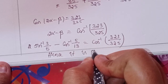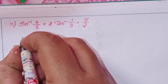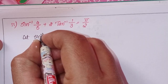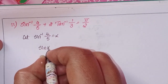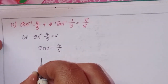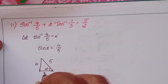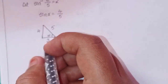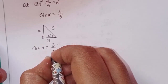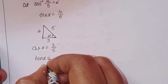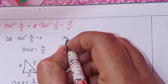Next, second problem. Let sin⁻¹(4/5) = alpha, so sin(alpha) = 4/5. Take a right triangle with angle alpha; opposite by hypotenuse, so automatically the adjacent side is 3.